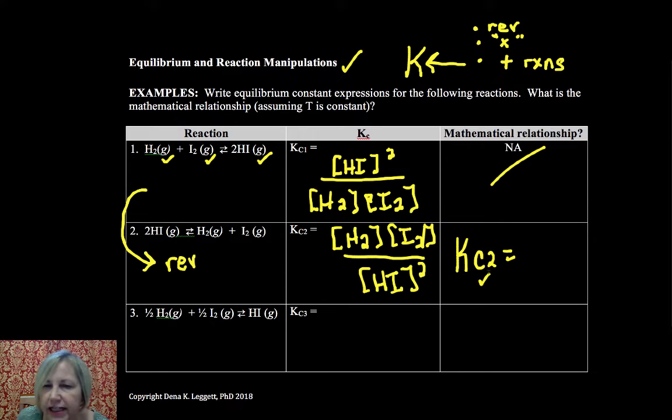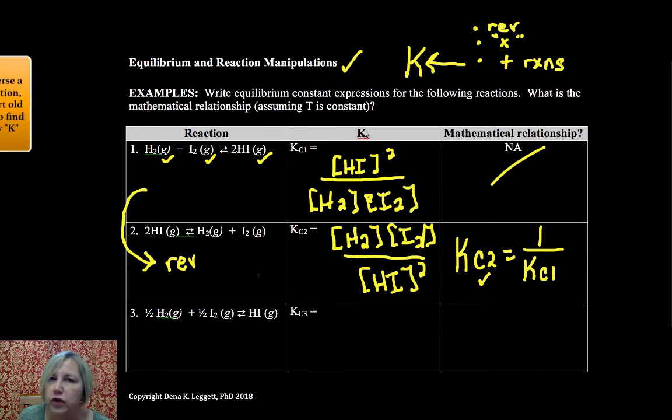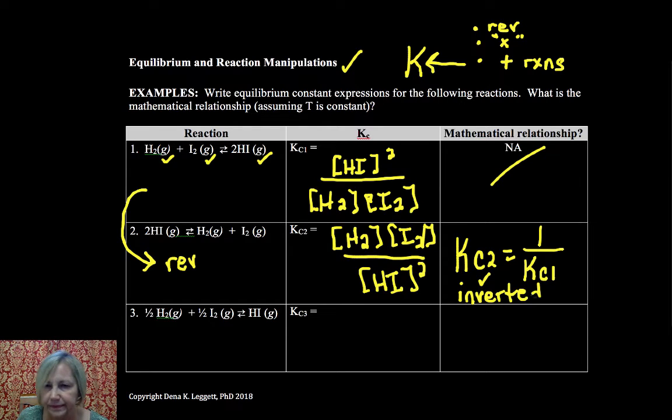It's hopefully not too challenging to see that KC2 is equal to 1 over KC1. KC in terms of concentration, 2 is just because I'm talking about reaction 2 here, is equal to the constant for the first reaction KC1 inverted. So I reversed a reaction, I inverted my K.